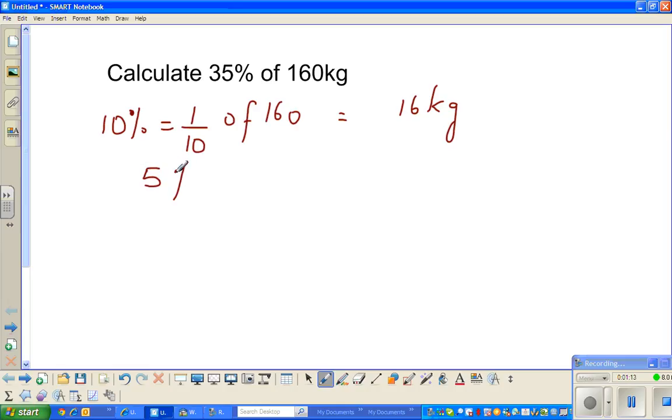So 10% is one tenth of 160, which is 16 kg. We want to find 35%, so let's write 5% now. 5% is half of 10%. It's all about logic. You know 10% is 16, so 5% is half of 10%, which is half of 16, which is 8 kg.